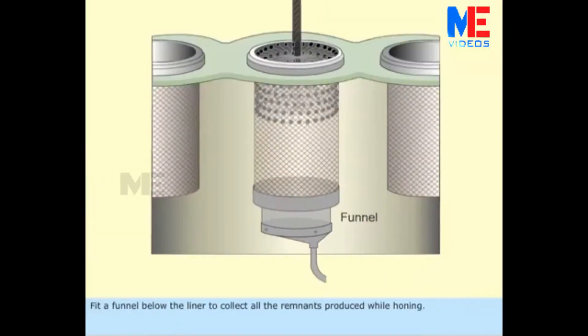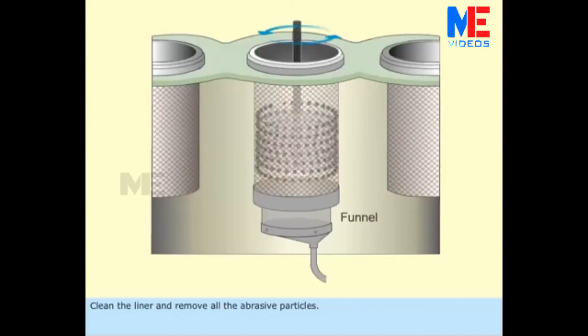Fit a funnel below the liner to collect all the remnants produced while horning. Clean the liner and remove all the abrasive particles.